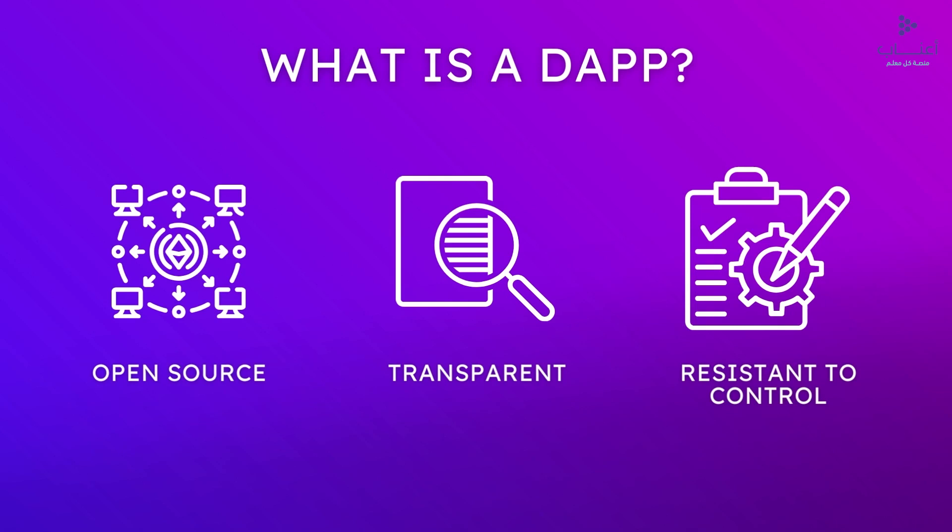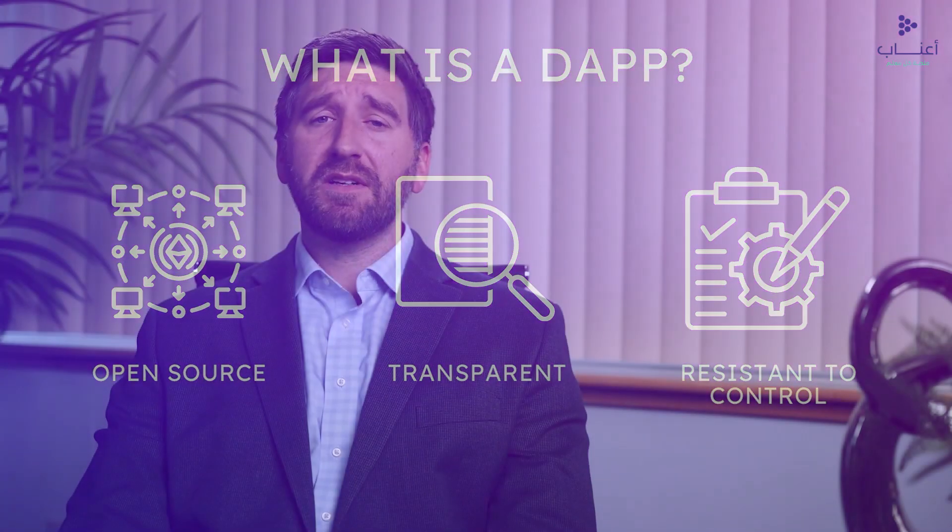Why does this matter? The features of DApps open up a world of potential benefits. Open source means anyone can view and contribute to the app's development. Transparency means that all transactions are openly viewable and verifiable. And resistance to control ensures that no single entity can manipulate the app for its own advantage.